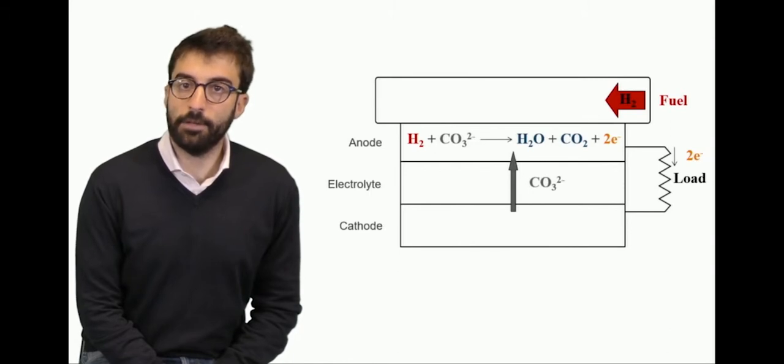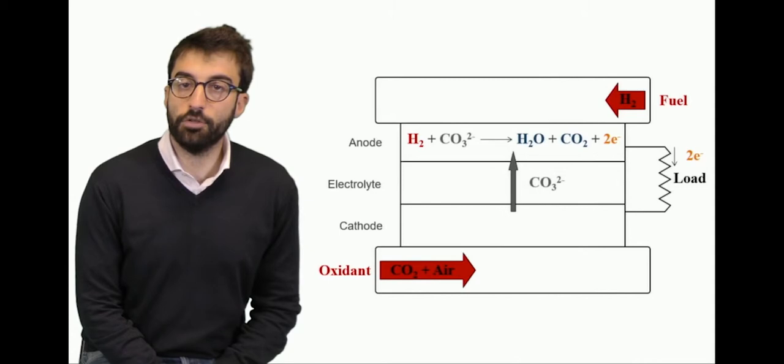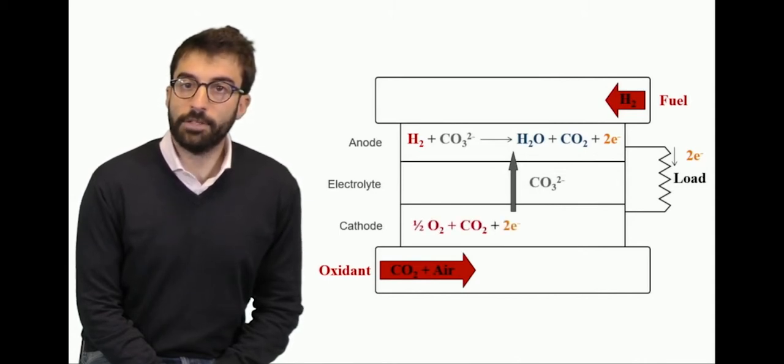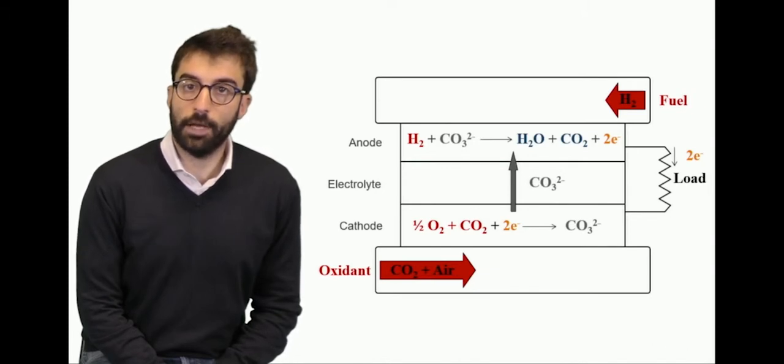At the same time, at the cathode electrode, we need to supply an oxidant, usually air, and carbon dioxide. Carbon dioxide reacts with oxygen in the air to produce carbonates. The carbonates are the ions supplied to the electrolyte so that as an overall balance, carbon dioxide is consumed at the cathode and produced at the anode.